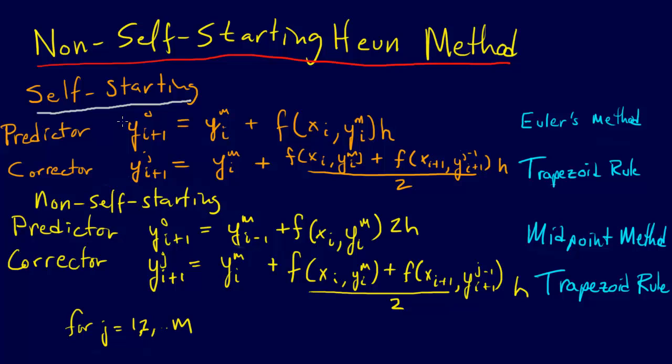It doesn't name something called the self-starting Heun method in the book, but it mentions the Heun method and specifically this iterative Heun method. And so just to draw out the differences a little bit more between implicit and explicit methods, implicit methods we're going to call methods that use iteration. And so Heun's method, if we just used a single iteration,